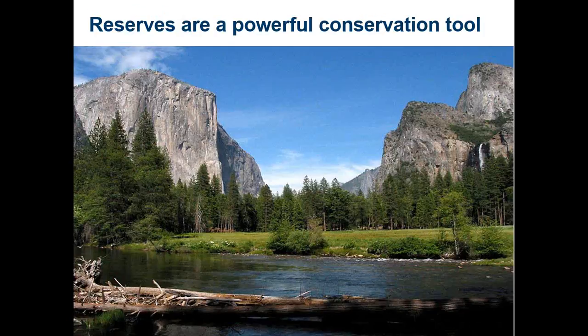We've known on land that reserves are a powerful conservation tool — we have over 100 years of history of this in the United States, like Yosemite Valley. But we are much further behind in the ocean. Probably the first underwater protected area was around 1960. We had some seabird reserves and land-based marine areas protected before that, but the first real underwater park was probably in Florida in the 1960s. So we have a much shorter timescale for underwater reserves, but we're seeing a nice accelerating trend in the past decade.